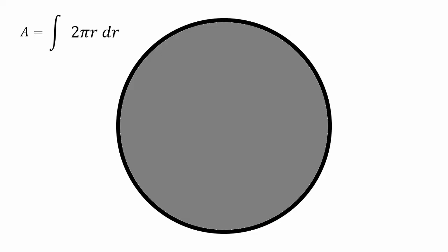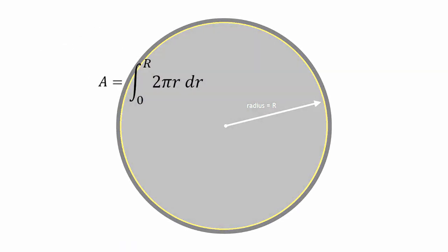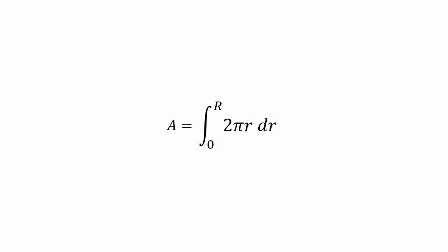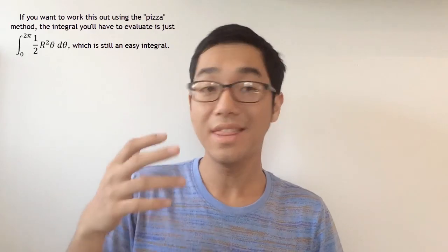Now, of course, we also need the limit of integration. The smallest layer will have the r equal to zero, which has no radius at all. And the largest layer will be when r equals the radius of the circle, or just r. And so we need to integrate from zero to r. And this is a really simple integral, which I won't even show you how to do. But you could show and you can verify that it does indeed equal to pi r squared.